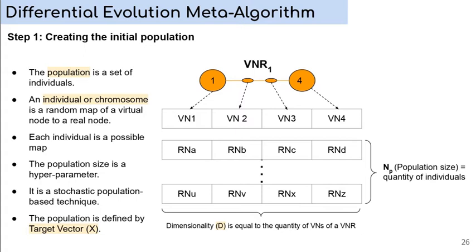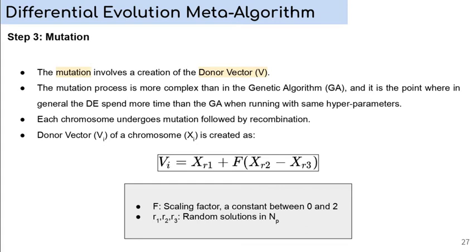The population is defined by a target vector. Due to the time limit, we will not detail the explanation of this equation, but its definition and parameters are presented.